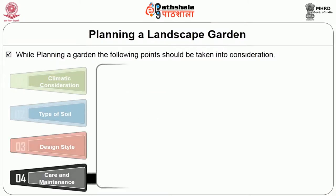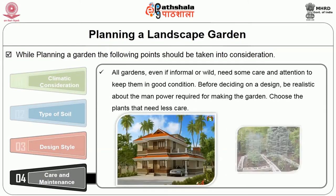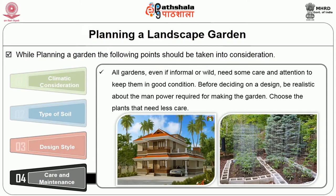The fourth one is maintenance considerations. All gardens, even if informal or wild, need some care and attention to keep them in good condition. Before deciding on a design, be realistic about the manpower required for making the garden. Choose plants that need less care. In South India, home landscapes are planned to provide enough shade to the homelands because light intensity is high in these areas. The homeland is judiciously assigned for outdoor living, vehicle parking, children's play and others to avoid interference with the garden area. Separate areas are also allocated for growing sacred flowers, vegetable gardening and flowers for personal decorations.